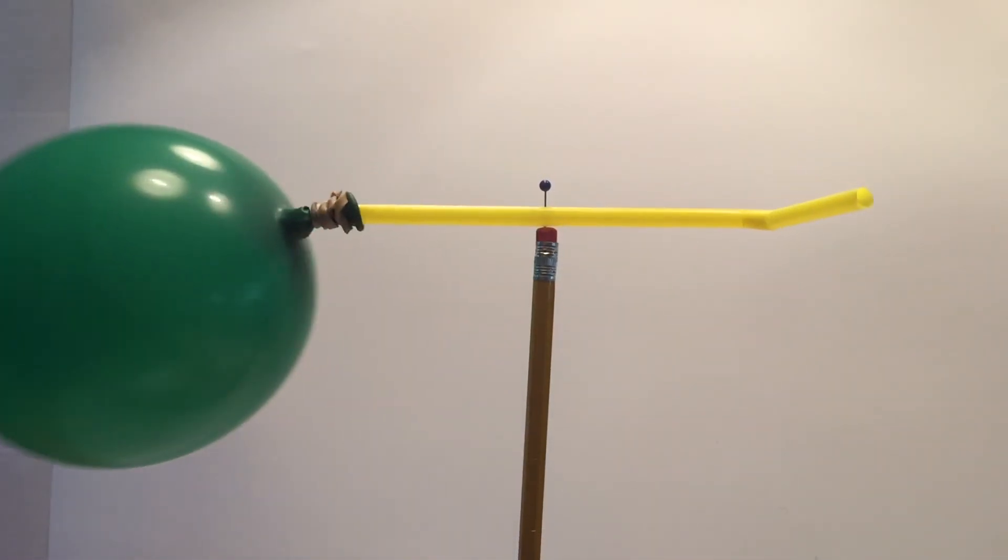In the case of our rocket, the pinwheel of the balloon forces the air out the straw and thrust causes the balloon to spin around in circular motion.